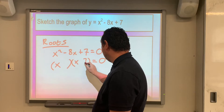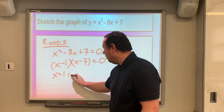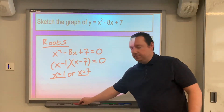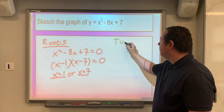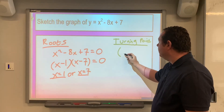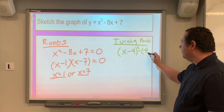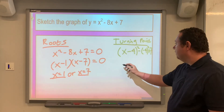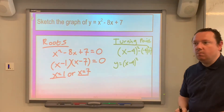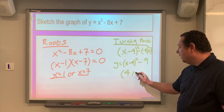Factorising: x and x — 7 times 1 is 7, and negative 7 take away 1 is negative 8 — so the roots are x equals 1 or x equals 7. The graph cuts the x-axis at 1 and 7. Now the turning point: completing the square, we've got x minus 4 all squared, take away minus 4 squared, then add 7. That gives minus 16 plus 7, which is negative 9. So our turning point is (4, −9).